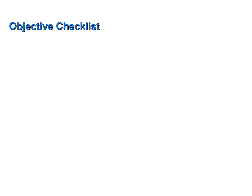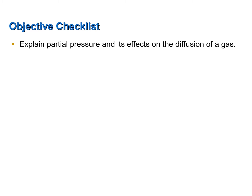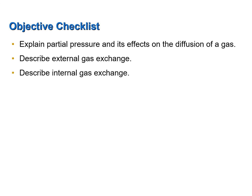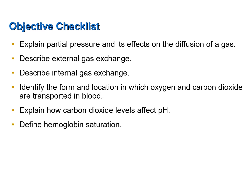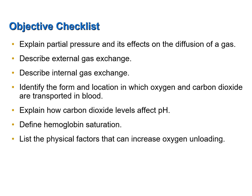Now let's review the objectives of the screencast: explain partial pressure and its effects on the diffusion of a gas; describe external gas exchange; describe internal gas exchange; identify the form and location in which oxygen and carbon dioxide are transported in blood; explain how carbon dioxide levels affect pH; define hemoglobin saturation; and list the physical factors that can increase oxygen unloading.